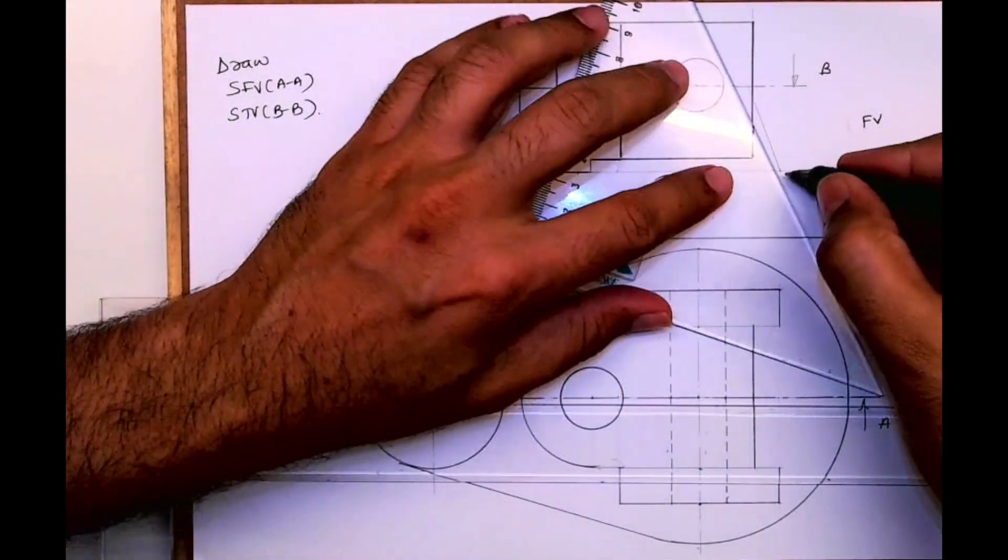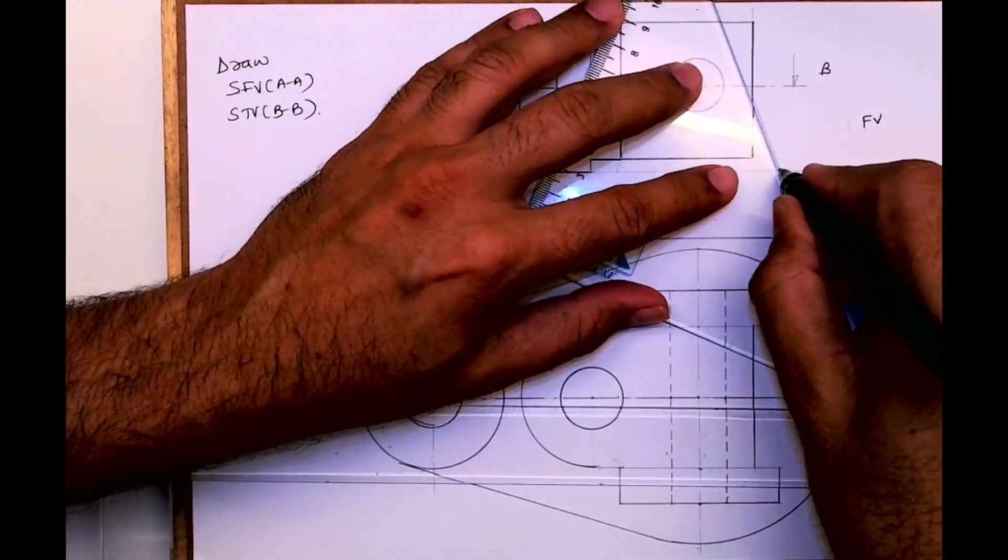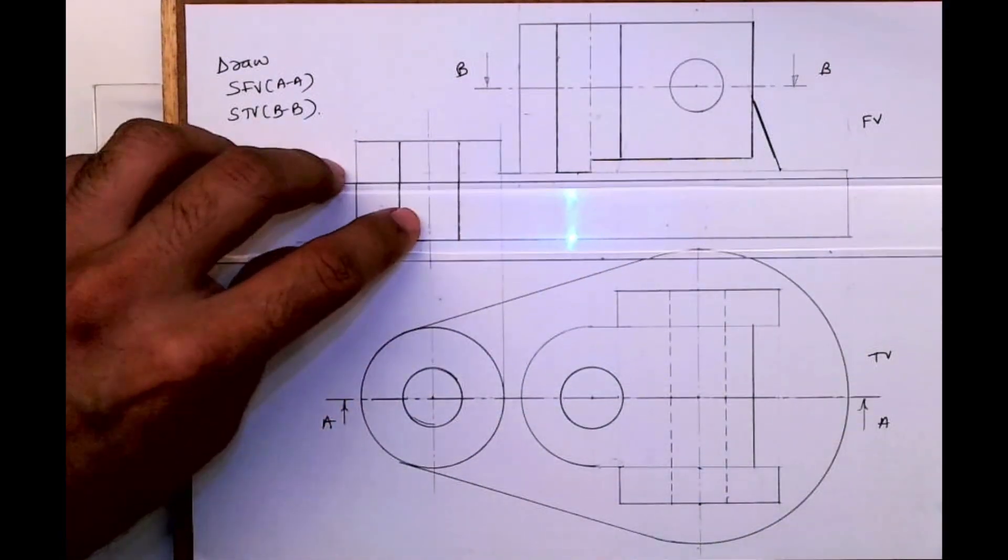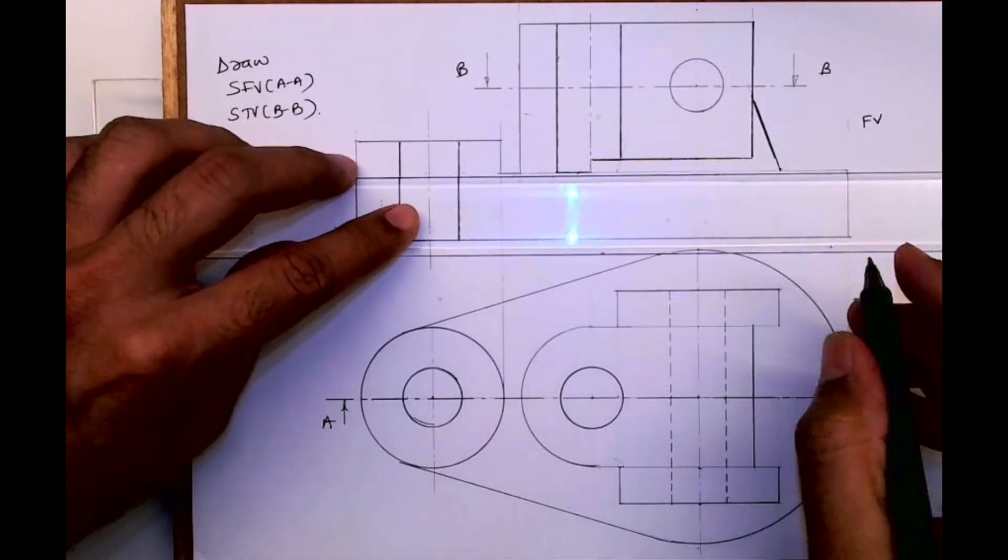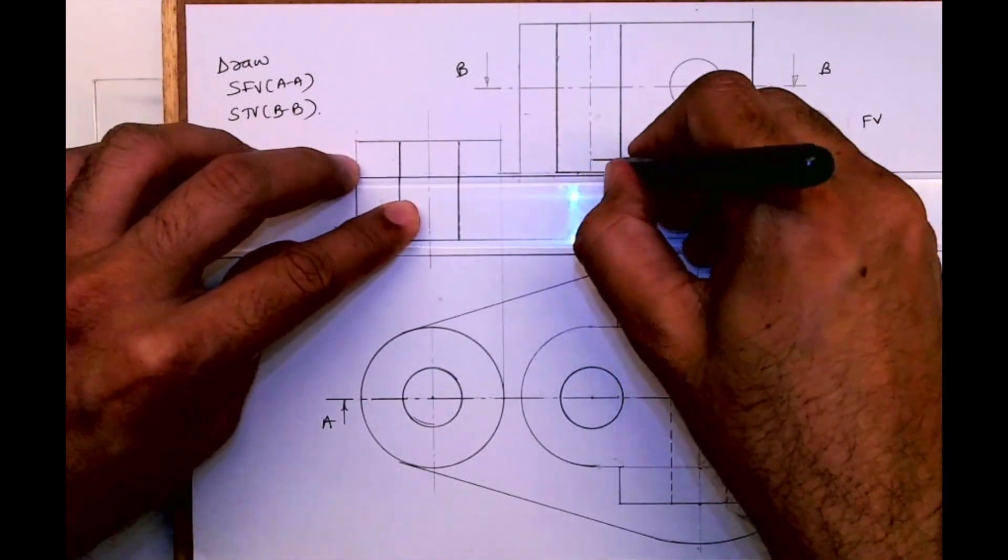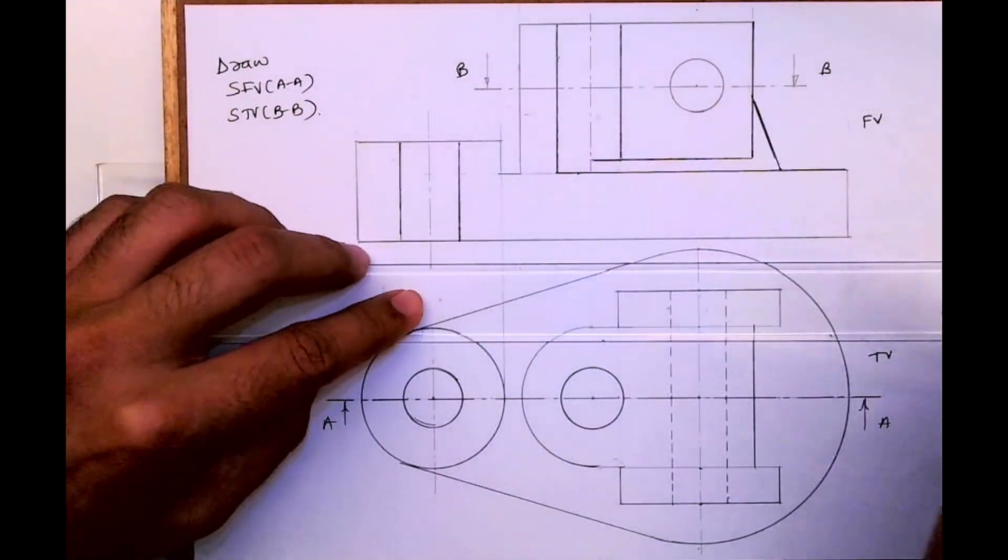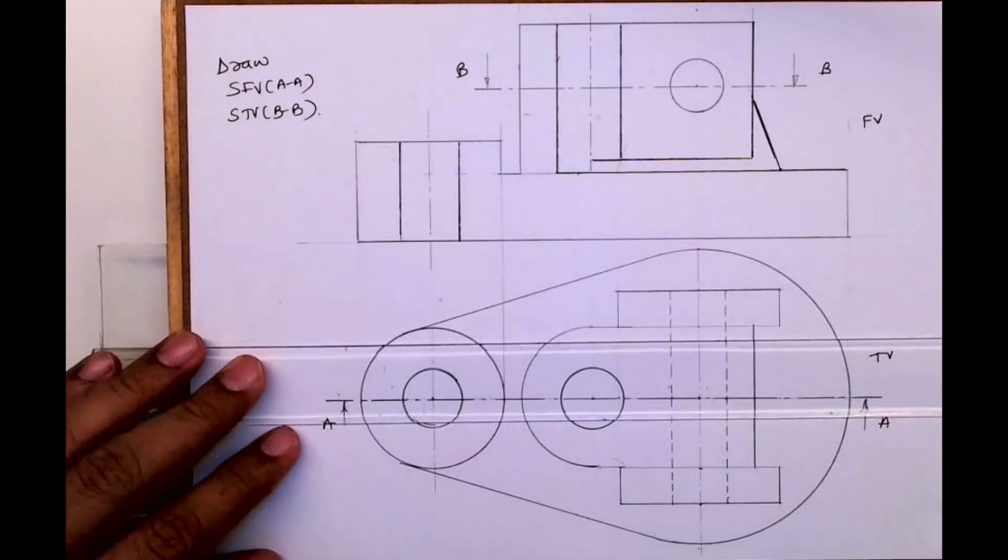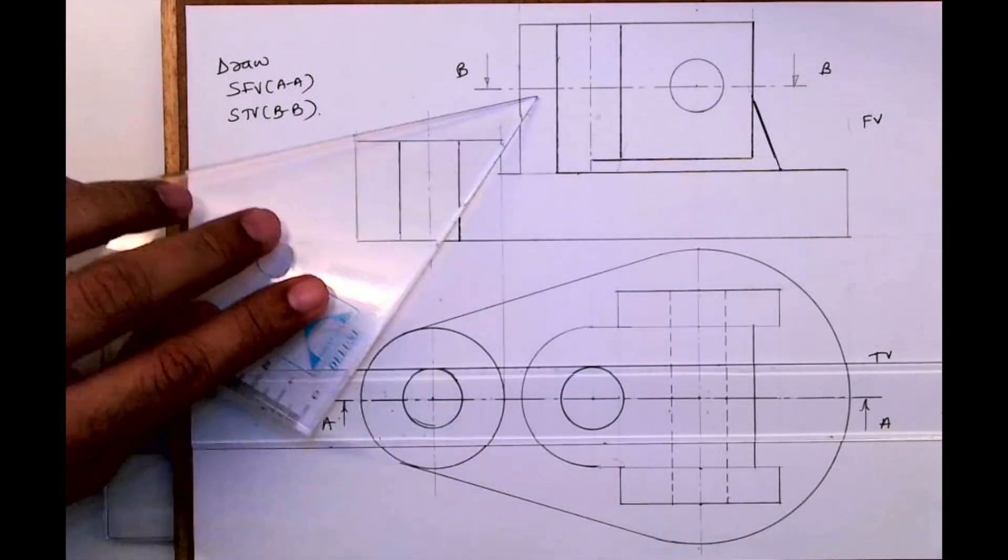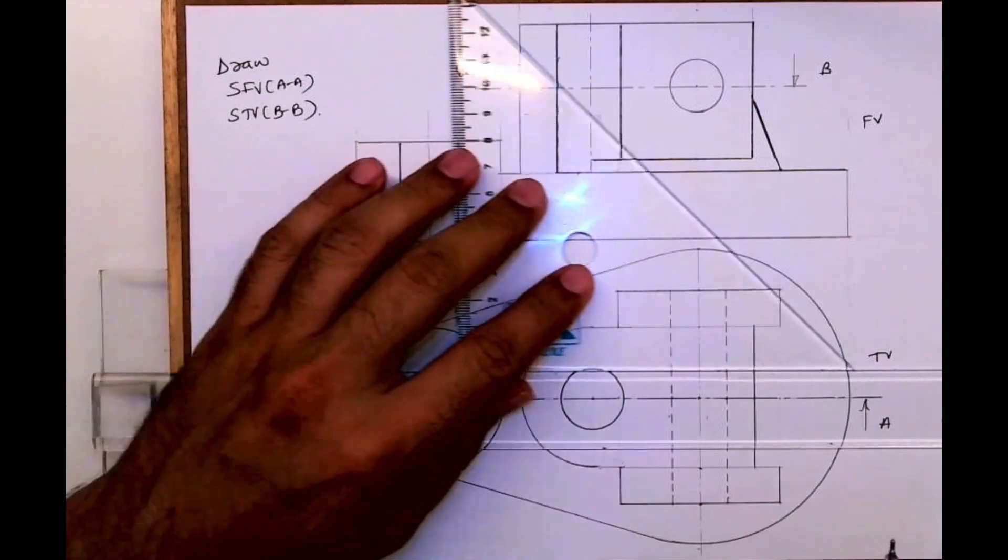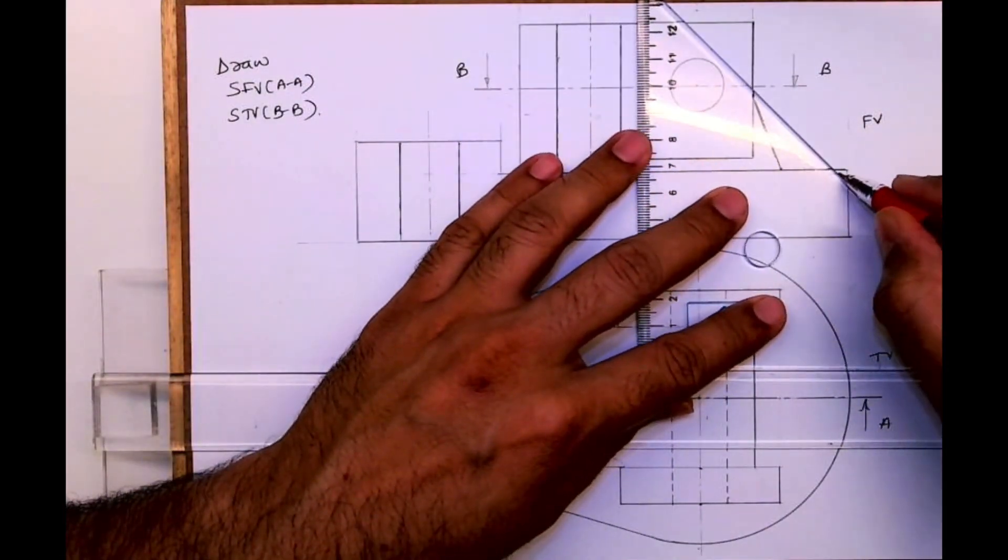In this part, the behind portion won't be hatched because we can see that behind portion. Now I'm doing hatching. We are done with the sectional front view.